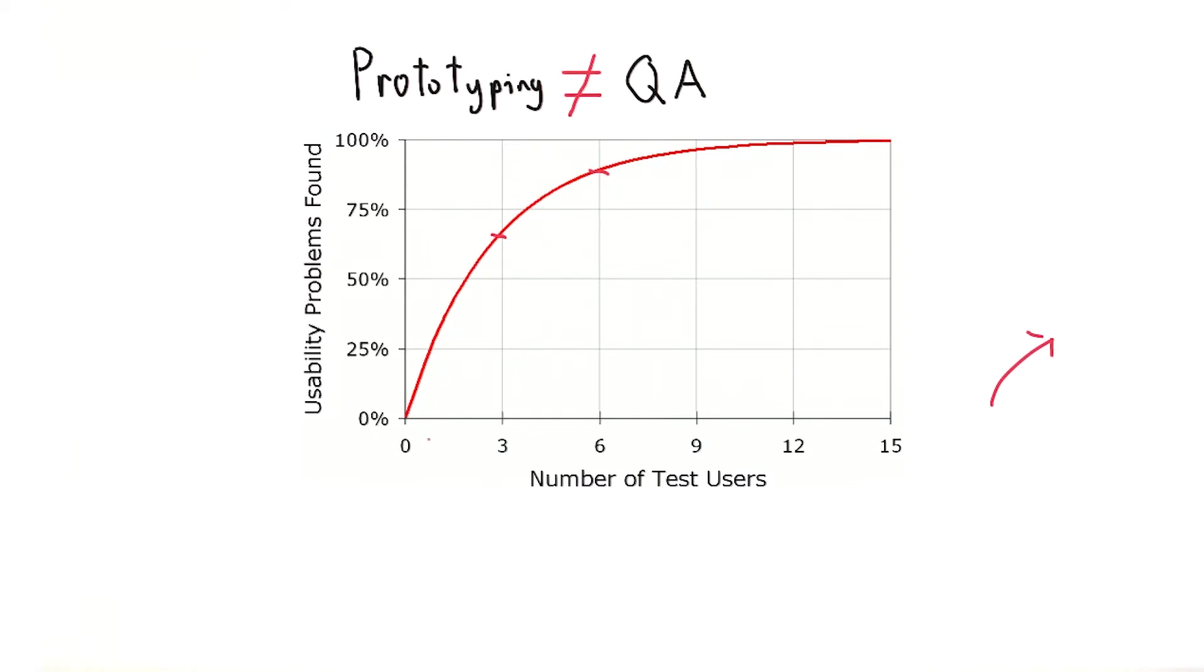When you have three to five users being asked the same questions, you start to see trends. User B will probably find some of the same flaws as user A, and these flaws should be counted as more glaring.